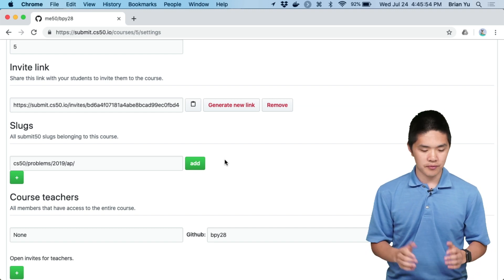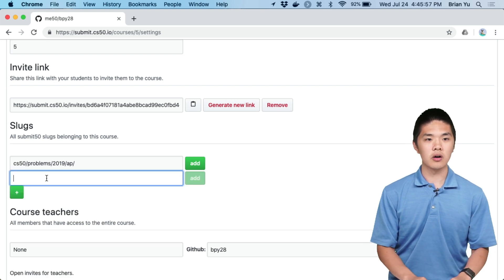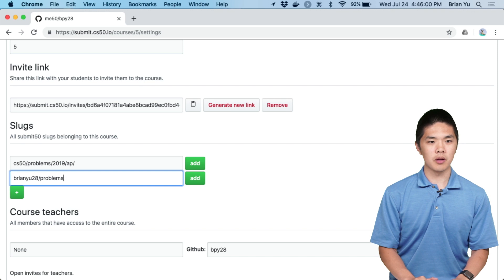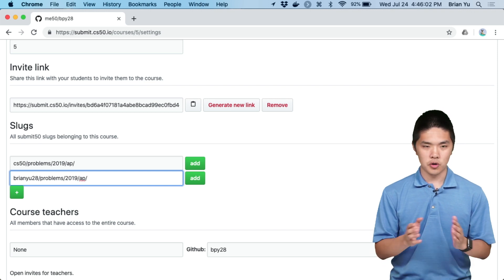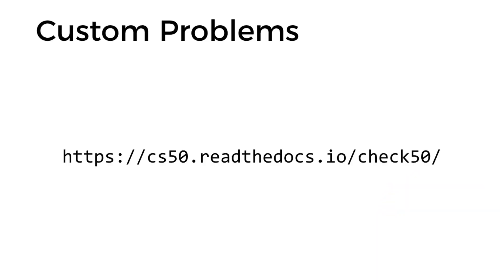If you've written problems of your own, you can also add your own slugs by using something like your own username/problems/wherever you've stored your problems. If you're interested in learning how to create custom problems that can be tracked on submit.cs50.io and correctness tested using Check50, go to cs50.readthedocs.io/check50 for more details.